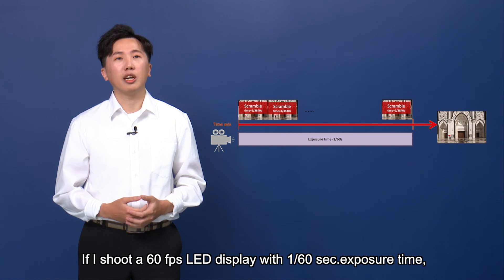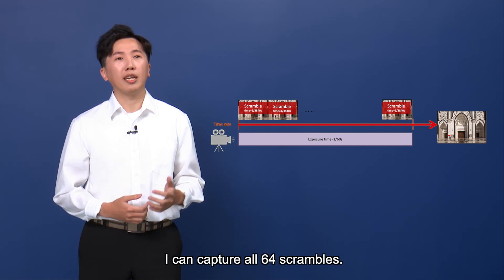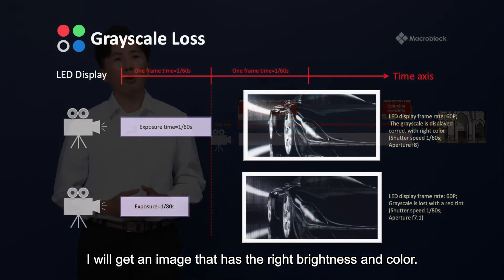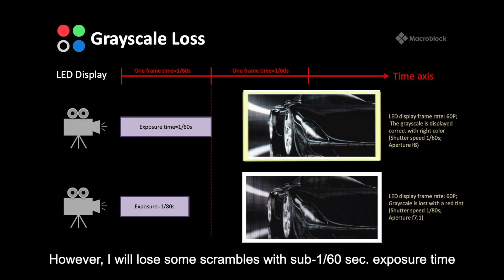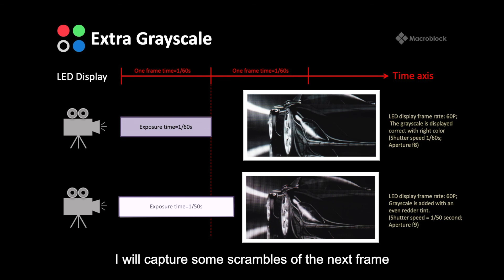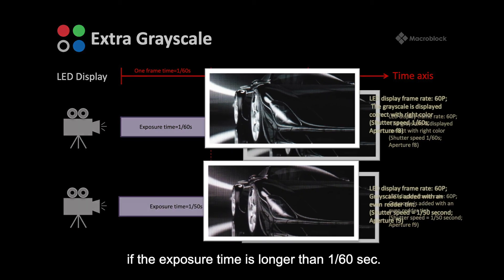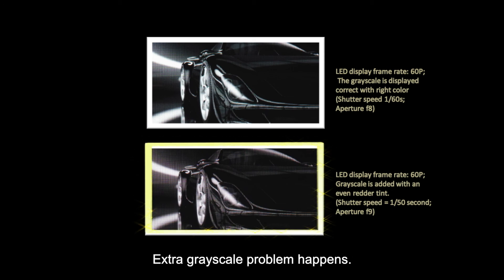If I shoot a 60fps LED display with 1/60th second exposure time, I can capture all 64 scrambles and get an image with the right brightness and color. However, with sub-1/60th second exposure time I'll lose some scrambles and the image will look off. On the other hand, if exposure time is longer than 1/60th second, I'll capture scrambles from the next frame, causing an extra grayscale problem.